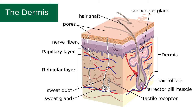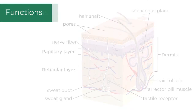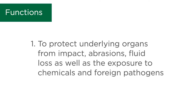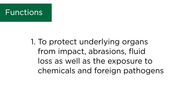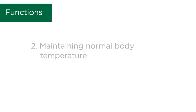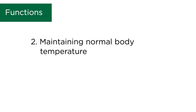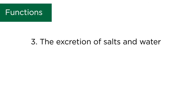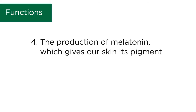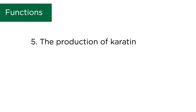As you can already see, there are many different structures within the integumentary system. These give rise to its numerous and various functions, including: 1. To protect underlying organs from impact, abrasions, fluid loss, as well as exposure to chemicals and foreign pathogens; 2. Maintaining normal body temperature; 3. The excretion of salts and water; 4. The production of melatonin, which gives our skin its pigment; and 5. The production of keratin.